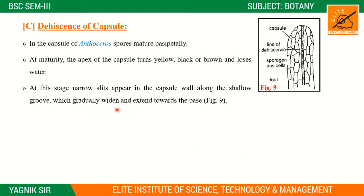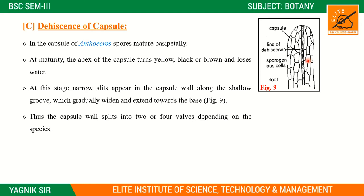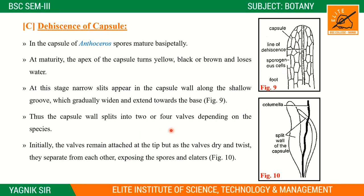These slits gradually widen and extend toward the base along the cell grooves. The capsule wall splits into two or four valves depending on the species. The grooves play an important role in releasing the spores.